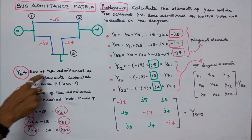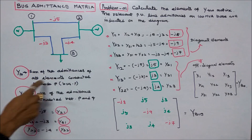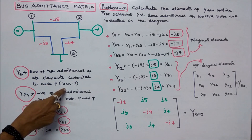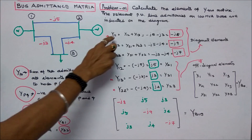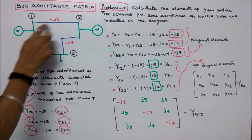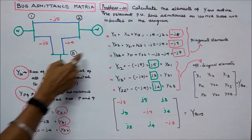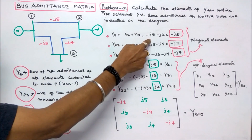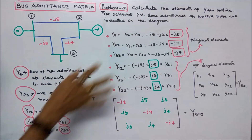YPP is the sum of the admittances of all elements connected to node P. Here Y11 is equal to Y12 plus Y13. That is equal to minus J5 minus J3, which equals minus J8.